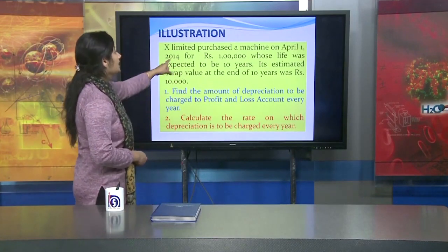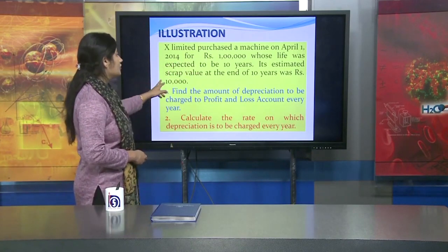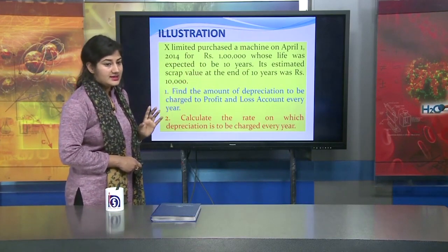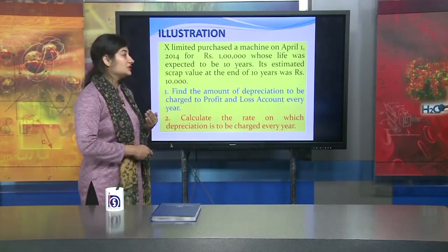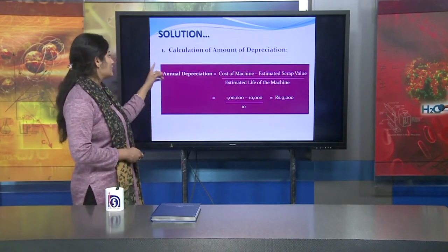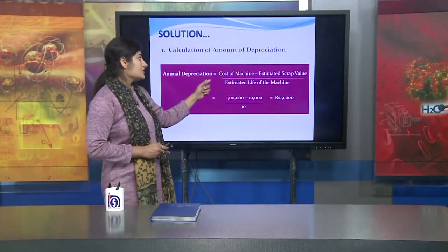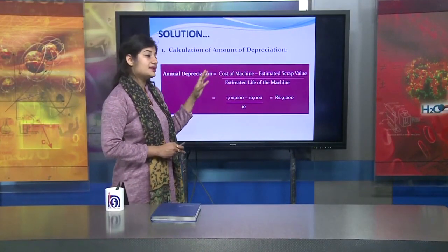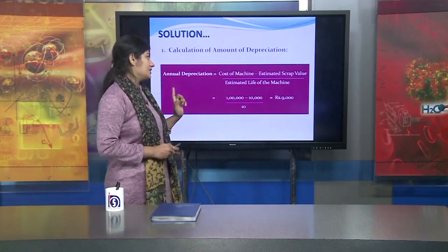First, you have to write down the basic details: machine purchased in April, cost 1 lakh rupees, estimated life 10 years, scrap value 10,000. After noting these details, you apply the formula. The formula for annual depreciation is: cost of machine minus estimated scrap value, divided by the estimated life of the machine.